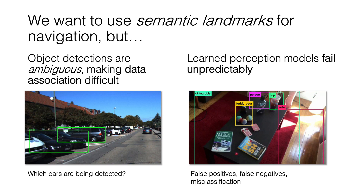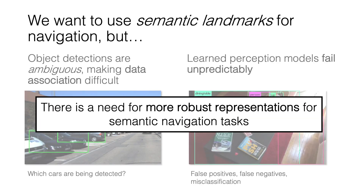We want to use semantic landmarks for navigation, but the issues we've seen in state-of-the-art object detectors present two challenges. First, object detections — usually represented as bounding boxes around the object of interest — are ambiguous, particularly in cluttered scenes, making data association a challenge. In this image of cars detected by a neural network, it's not clear to a human which cars are being detected. Beyond that, learned perception models may fail unpredictably, so any navigation method using these models must account for false positives, false negatives, and misclassification errors. As a consequence, there's a need for more robust representations for semantic navigation tasks in order to leverage the benefits of learned perception models while mitigating their failures.